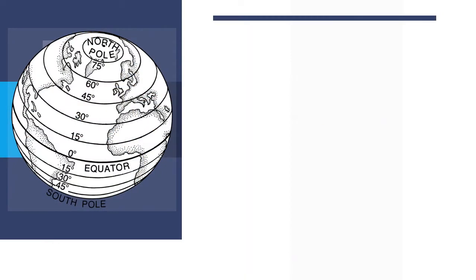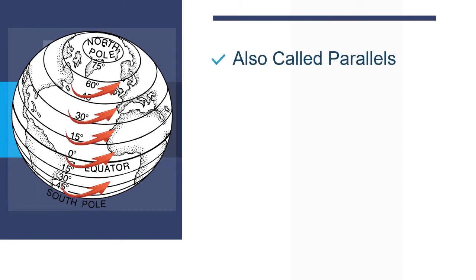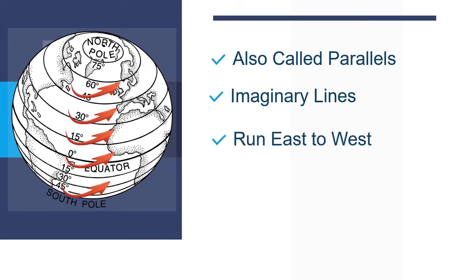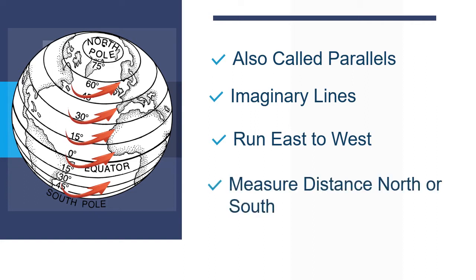As we discussed in my previous video, lines of latitude are also called parallels. These are imaginary lines that divide the earth into two parts. They run east to west but measure the distance north or south. Most importantly, the equator is the most well-known parallel.